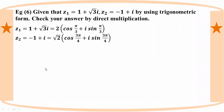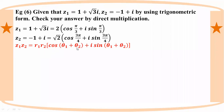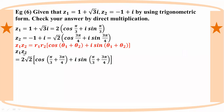Now we compute the multiplication z1 times z2. We apply the product formula: r1·r2 equals 2 times root 2, and the angles add: θ1 plus θ2 equals π/3 plus 3π/4.